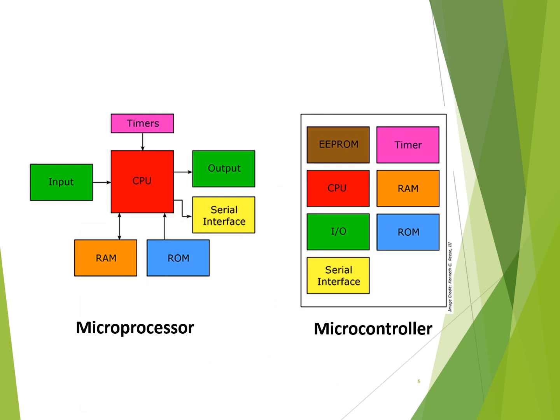This diagram gives you a clear view about what is a microprocessor and what is a microcontroller. A microprocessor has the central processing unit connected externally with all the memories, IO devices, and serial interface. But a microcontroller is a single chip which consists of the microprocessor along with RAM, ROM, IO ports, serial interface, and timers — all put together into a single IC.